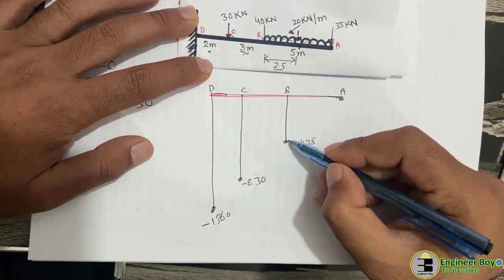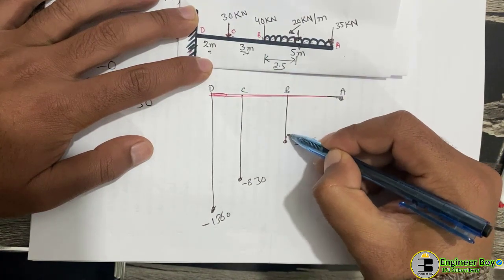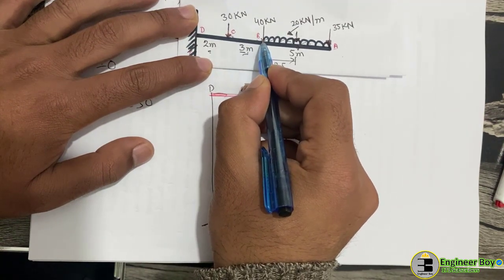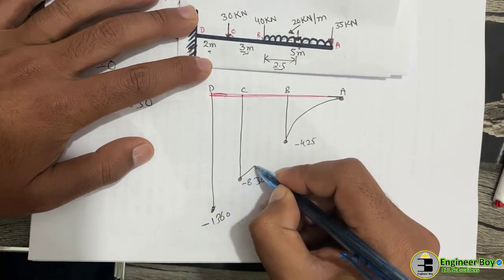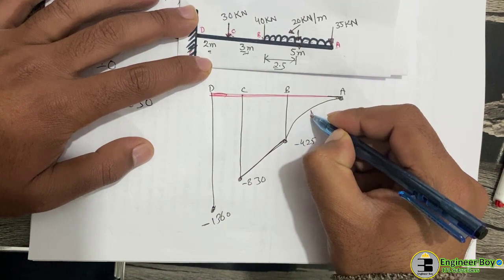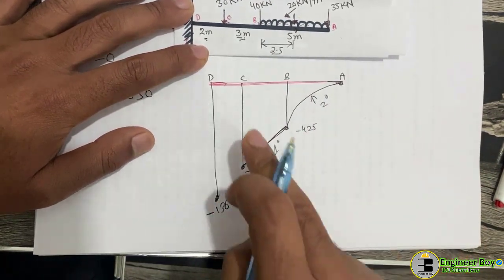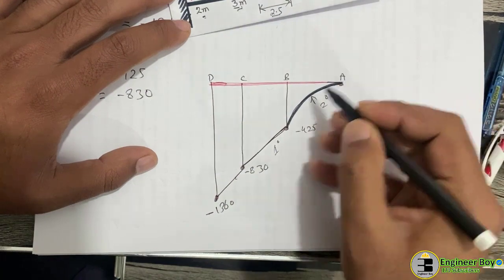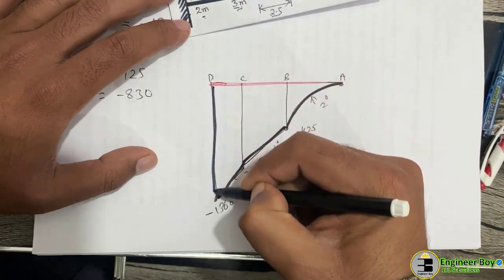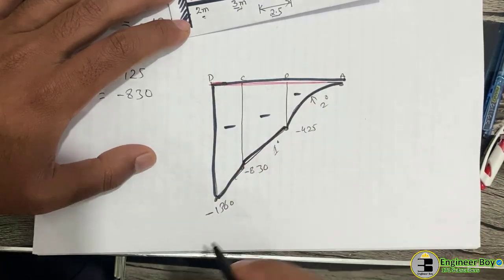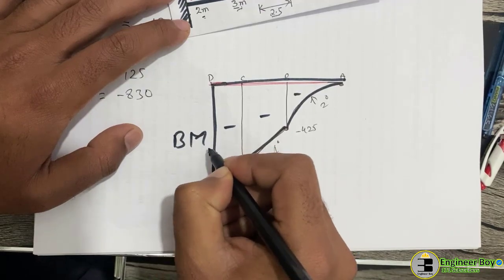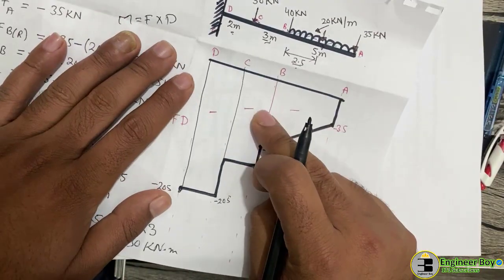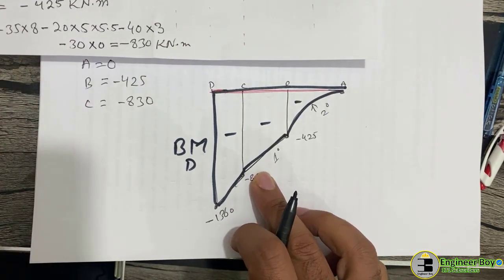Between A and B there is a UDL, so we join those points with a second-degree parabolic curve. Between B and C there is a point load, so we join with a first-degree straight line. Between C and D there is also a point load, so again a straight line. This completes the negative bending moment diagram.